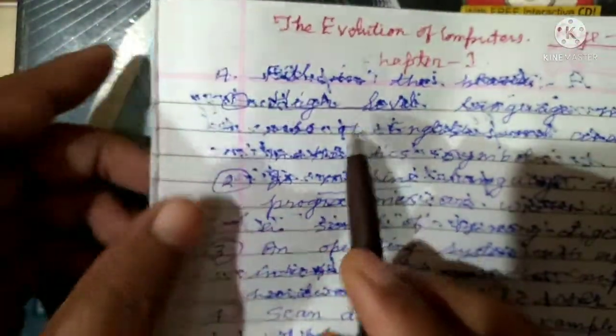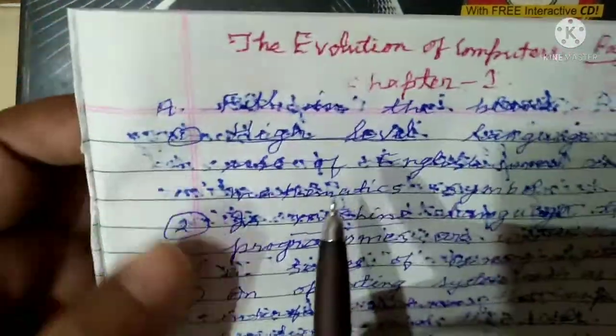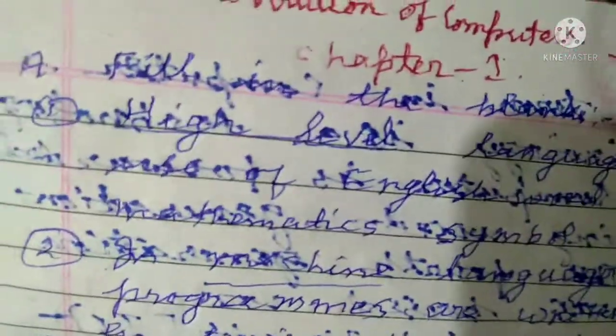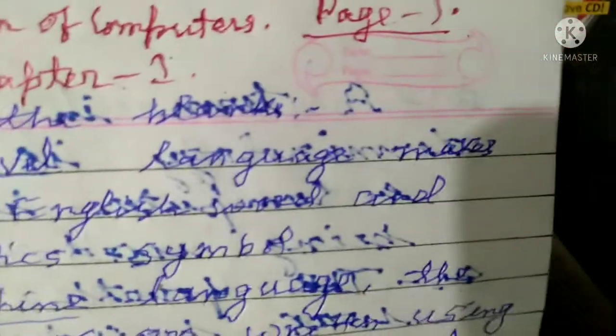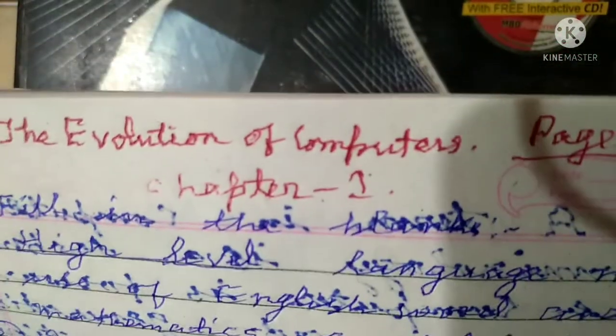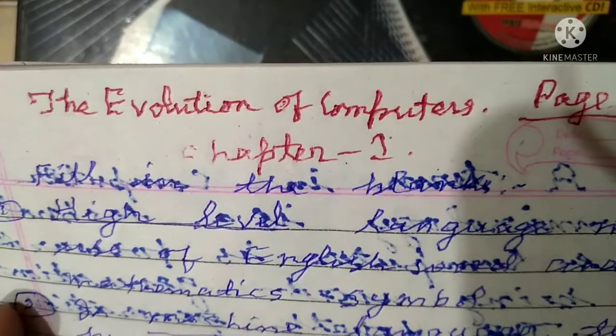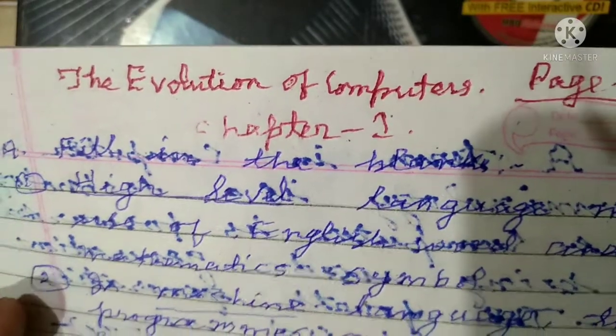Now, fill in the blanks. The answer is: high-level language — high-level language uses high levels of English and mathematics symbols.